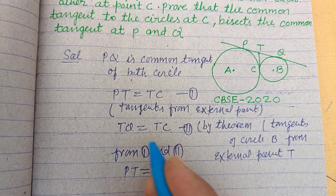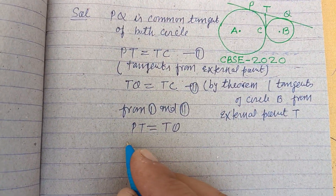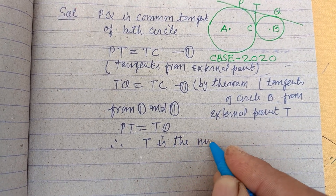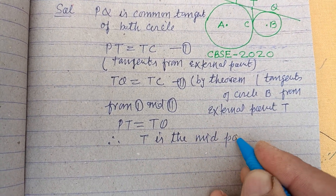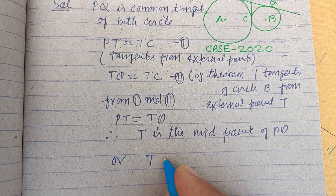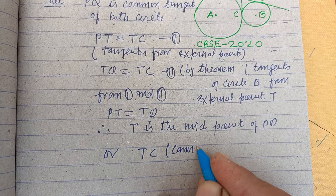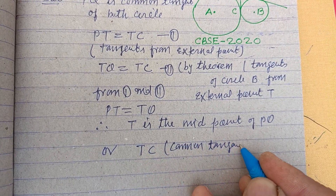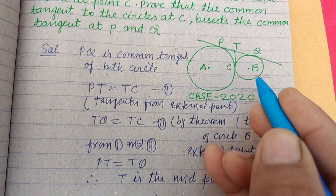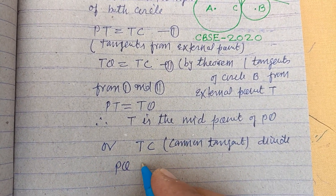From the first and second results, we have PT equal to TQ. Therefore, T is the midpoint of PQ, which means TC, the common tangent at C, divides PQ at its midpoint.